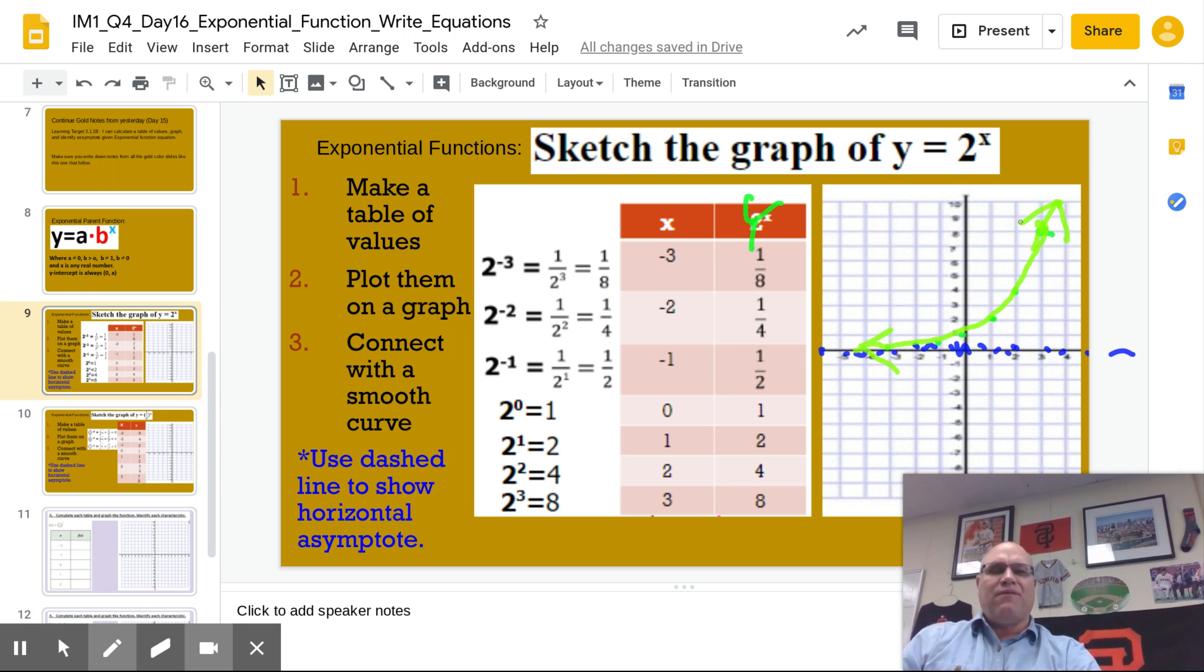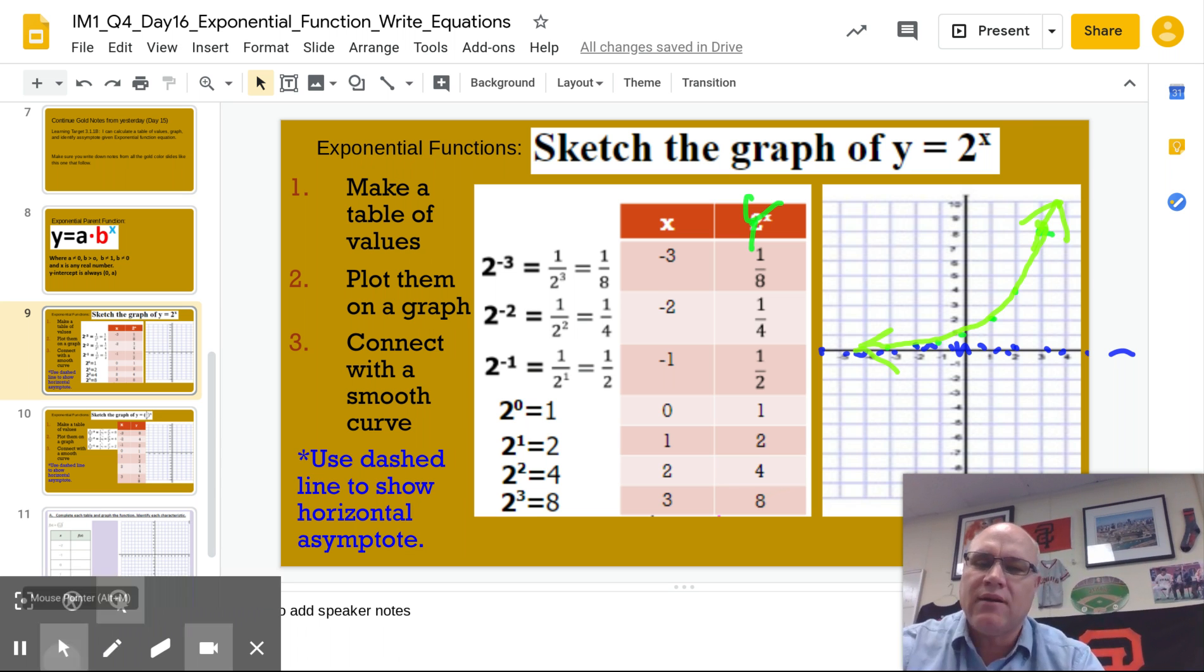So the domain for this function is going to be x equals all real numbers. The range for this function is going to be y is greater than the asymptote, which is going to be y is greater than 0.